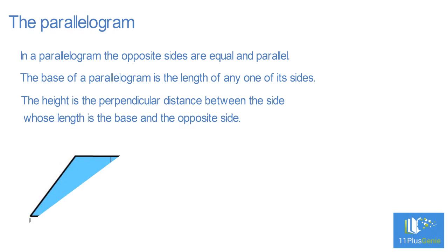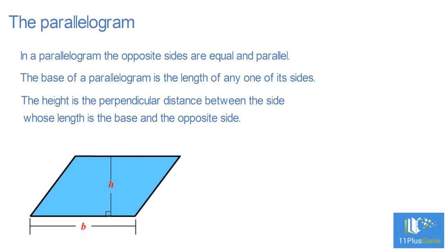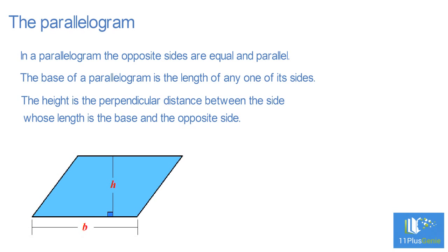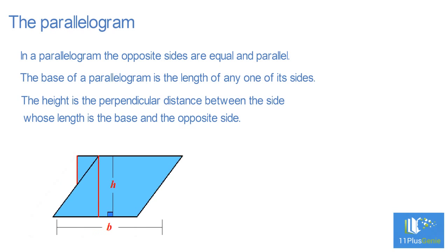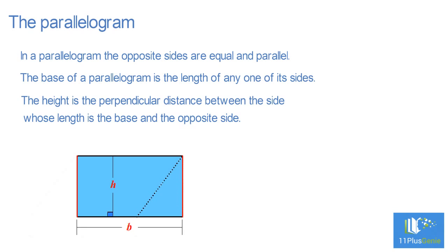Start with any parallelogram with base B and height H. Cut the parallelogram to form a right-angle triangle and a trapezium. Move this triangle to the other side of the parallelogram — it should fit perfectly to form a rectangle with base B and height H.